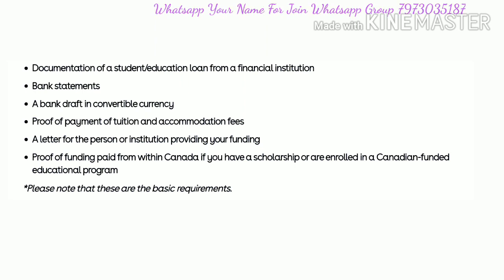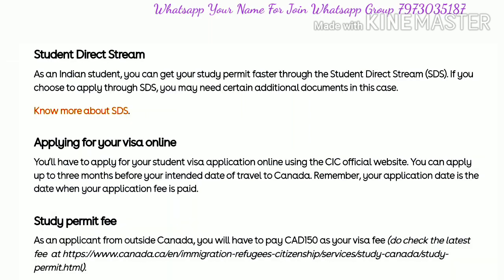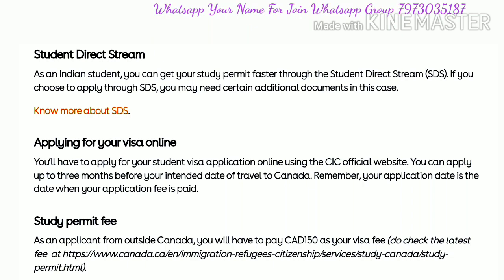You should also have a Student Direct Stream application, known as SDS. You can only apply under SDS if you have an IELTS overall score of 6.5, or at minimum 6.0 — not less than 6 in any module. A score of 5.5 gives very little chance of SDS visa approval, so overall six bands with not less than six is the minimum requirement.